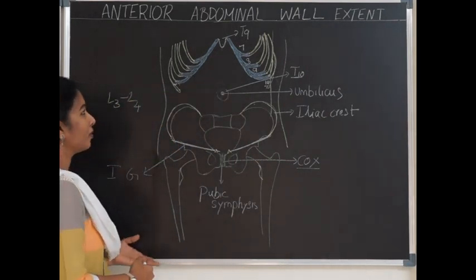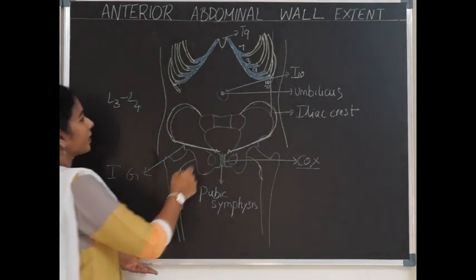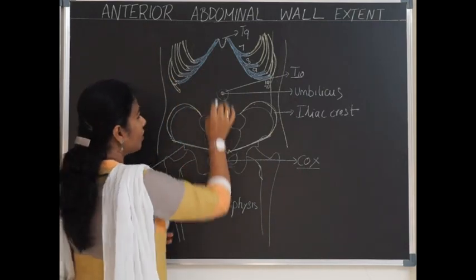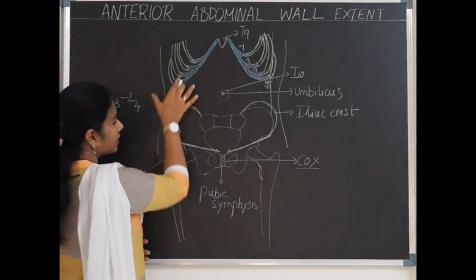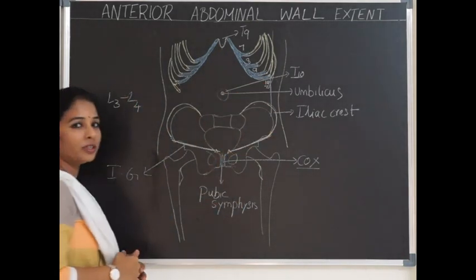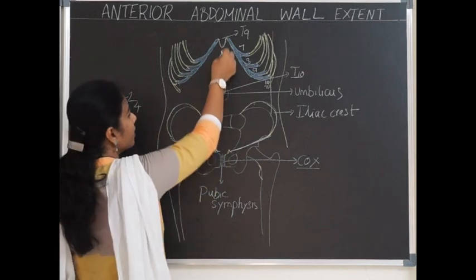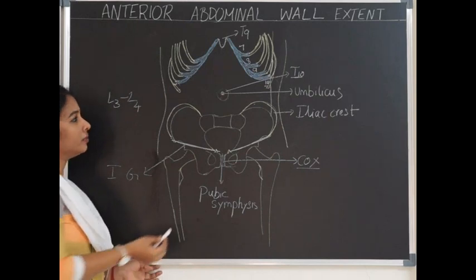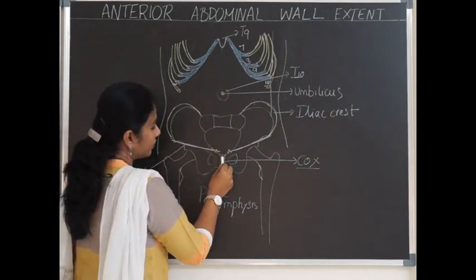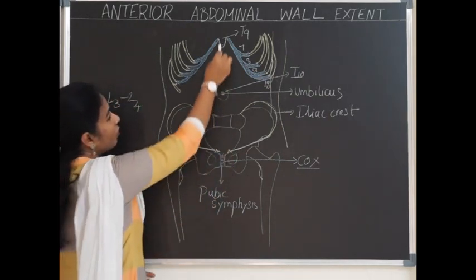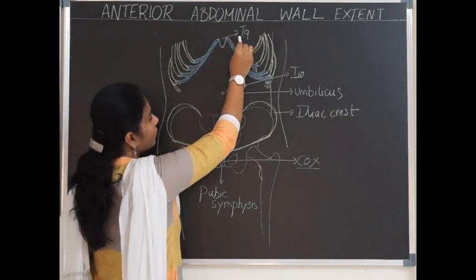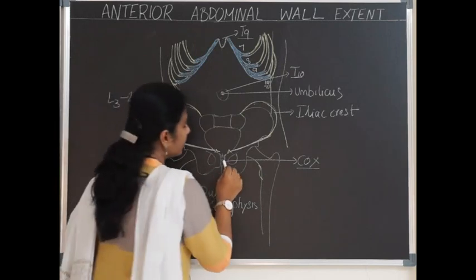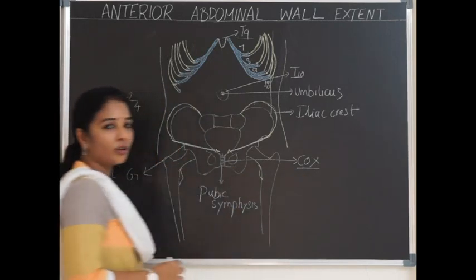It extends — and to say it correctly, it is actually the anterolateral abdominal wall, because it is present anteriorly as well as on the lateral side of the abdomen. It extends in the midline from the xiphoid process — the lower tip of the sternum — down to the pubic symphysis. The xiphoid process lies at the level of the T9 vertebra, and the pubic symphysis lies at the level of the coccygeal vertebra.